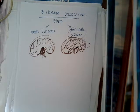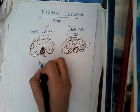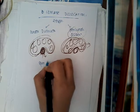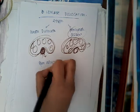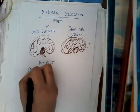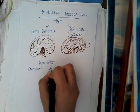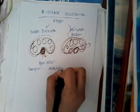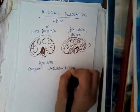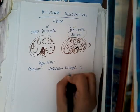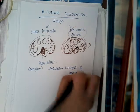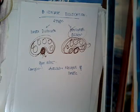How are we going to treat it? For any dislocation you need to do a reduction — here we do an open reduction. The main complication of lunate dislocation is avascular necrosis of the lunate.